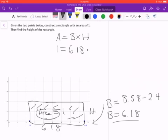And this is times... We don't know the height. So now we're going to do the same thing we did in the previous problem and divide both sides by 6.18 and divide this side by 6.18.